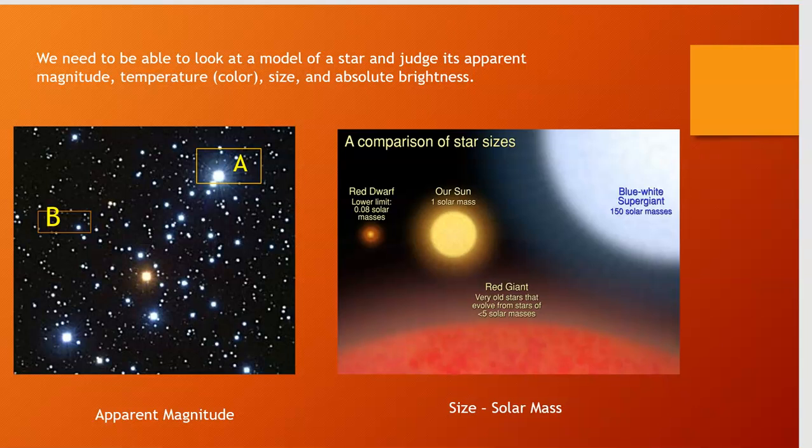Let's first talk about apparent magnitude. In my first illustration, I've pointed out two stars. In this box here that I've labeled A, I'm talking about this super bright looking star right here. And over here, in this box I labeled B, I'm talking about this seemingly little guy right here.